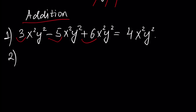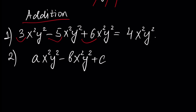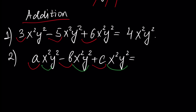Another example: a times x squared times y squared, minus b times x squared y squared, plus c times x squared y squared. In this case, we can assume that a, b, and c are coefficients and the other part of our monomials are the same. So, we can add these monomials and the coefficients will be a minus b plus c, giving us a minus b plus c times x squared y squared.